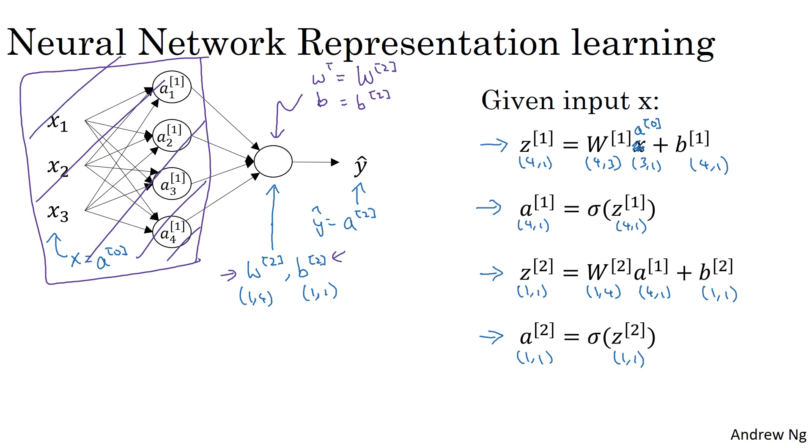So just to recap, for logistic regression, to implement the output or to implement prediction, you compute z equals w transpose x plus b and a y hat equals a equals sigmoid of z. When you have a neural network with one hidden layer, what you need to implement to compute this output is just these four equations. And you can think of this as a vectorized implementation of computing the output of first, these four logistic regression units in the hidden layer. That's what this does. And then this logistic regression in the output layer, which is what this does.